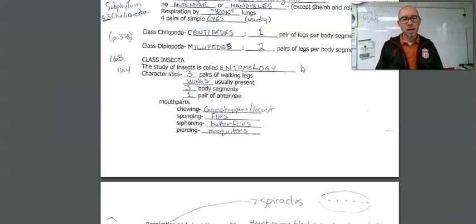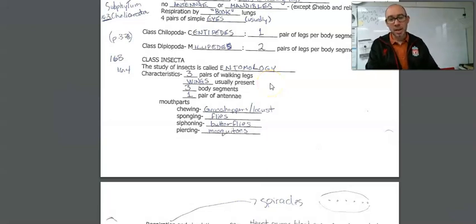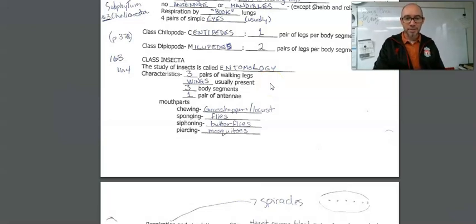Characteristics of class Insecta: three pairs of walking legs, typically. Wings usually present, though not all. Some have their wings hiding underneath hard outer coverings, like beetles. Some, they're just out there. Some, like ants, don't have wings, though some ants do. These are just typical characteristics, but there's wide variety. A lot of them are classified by the types of wings they have. Three body segments, and typically one pair of antennae or feelers.